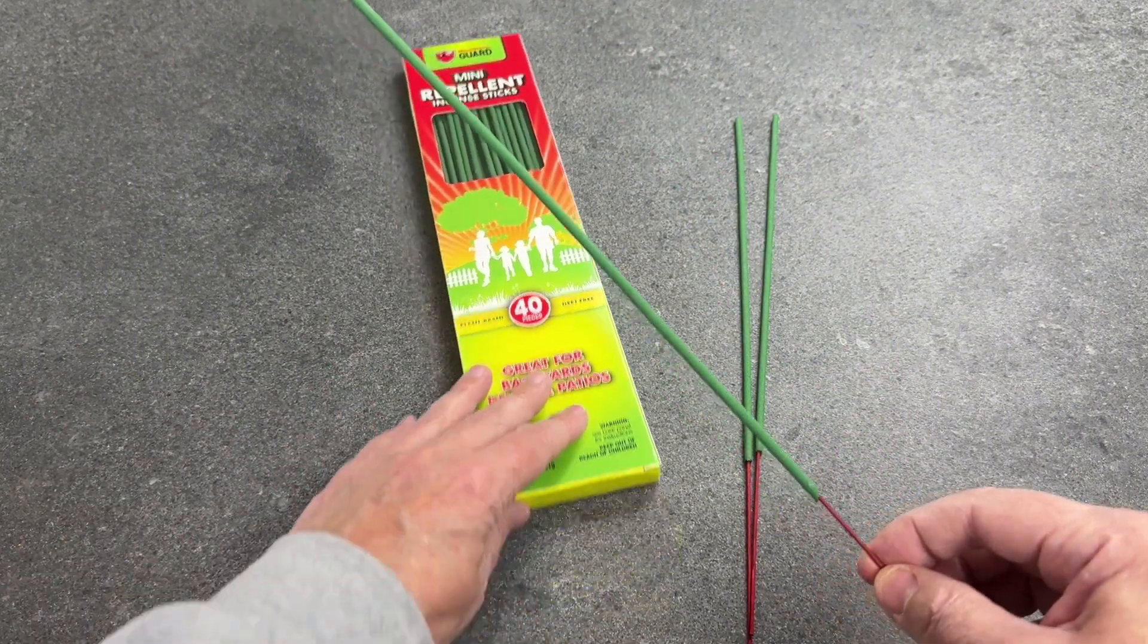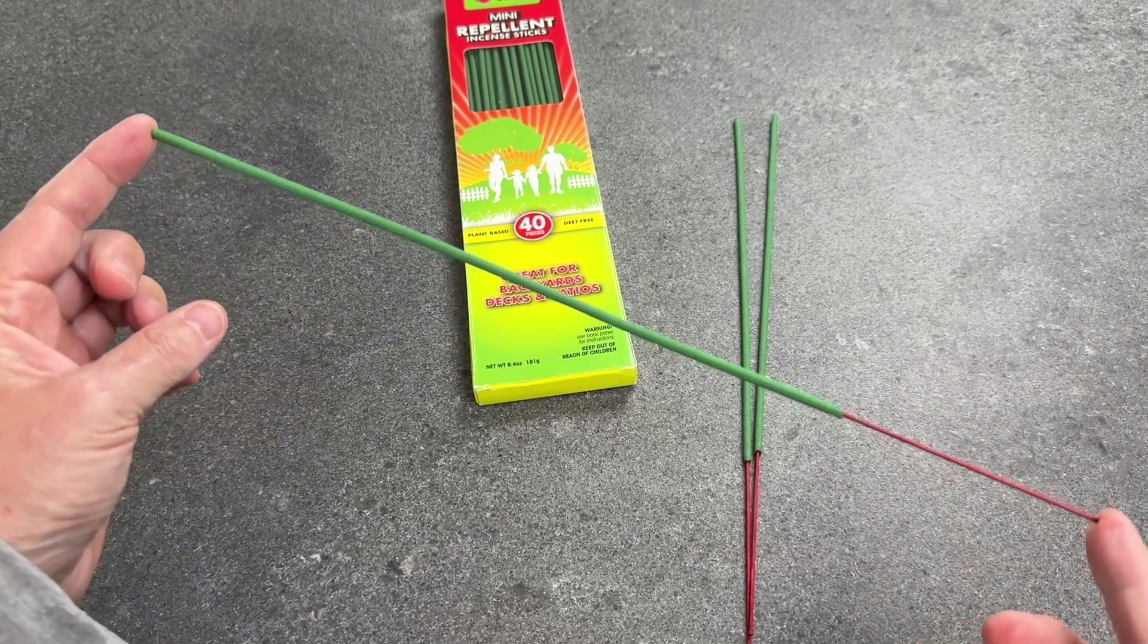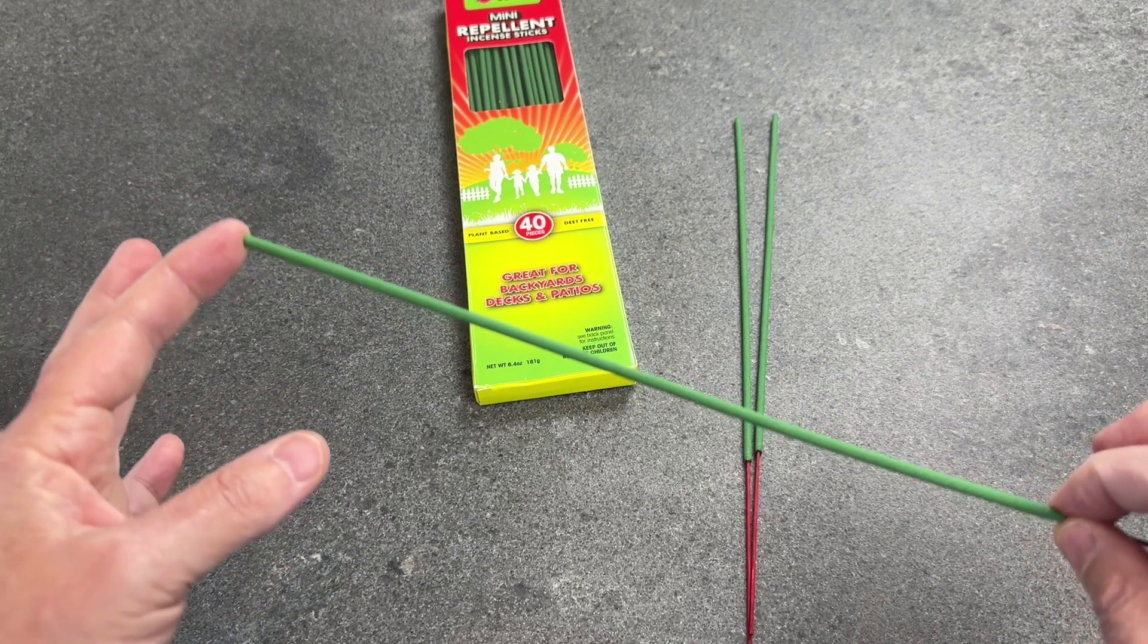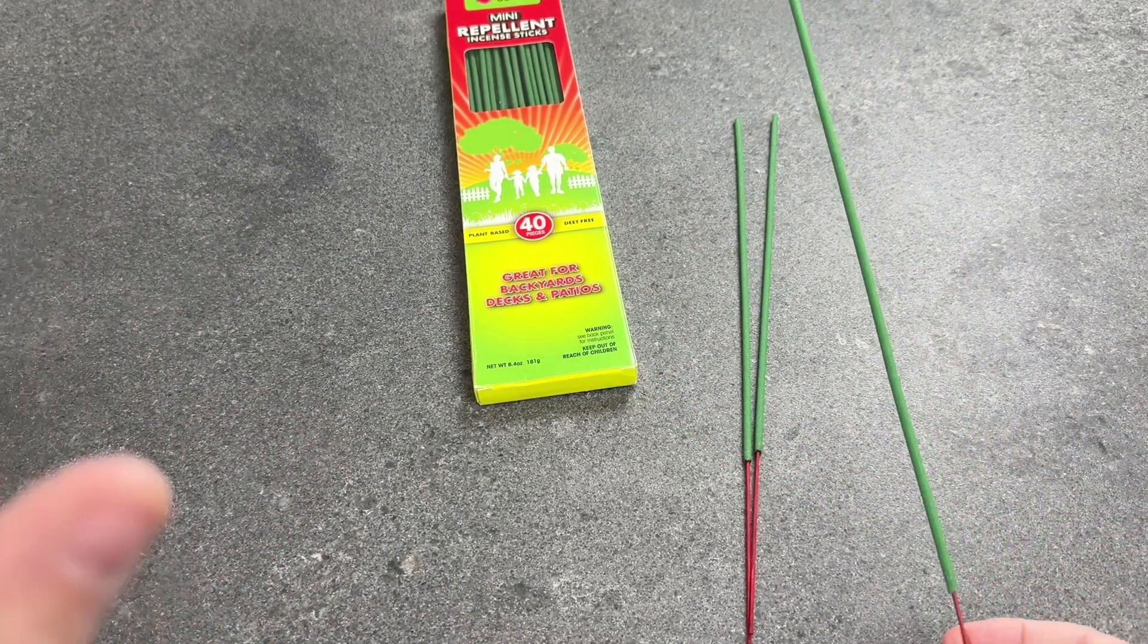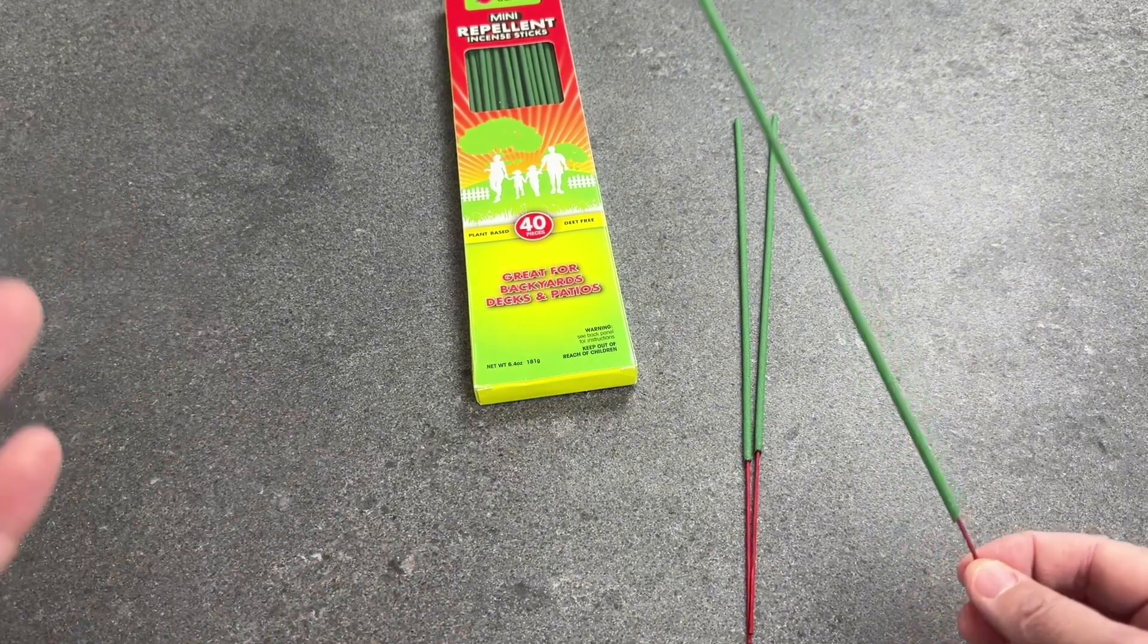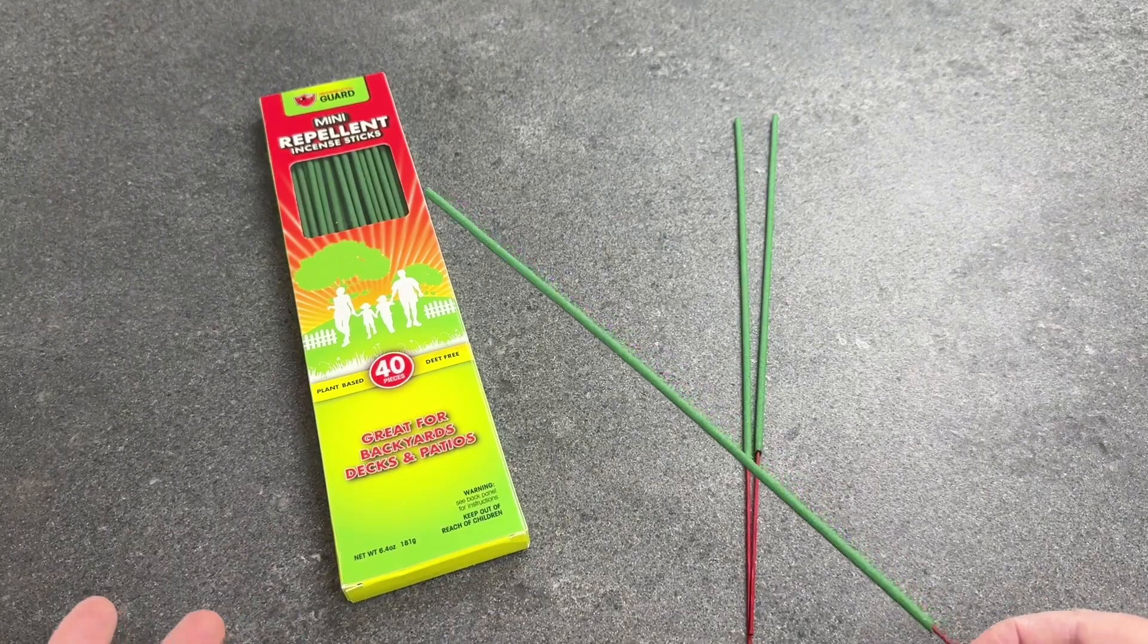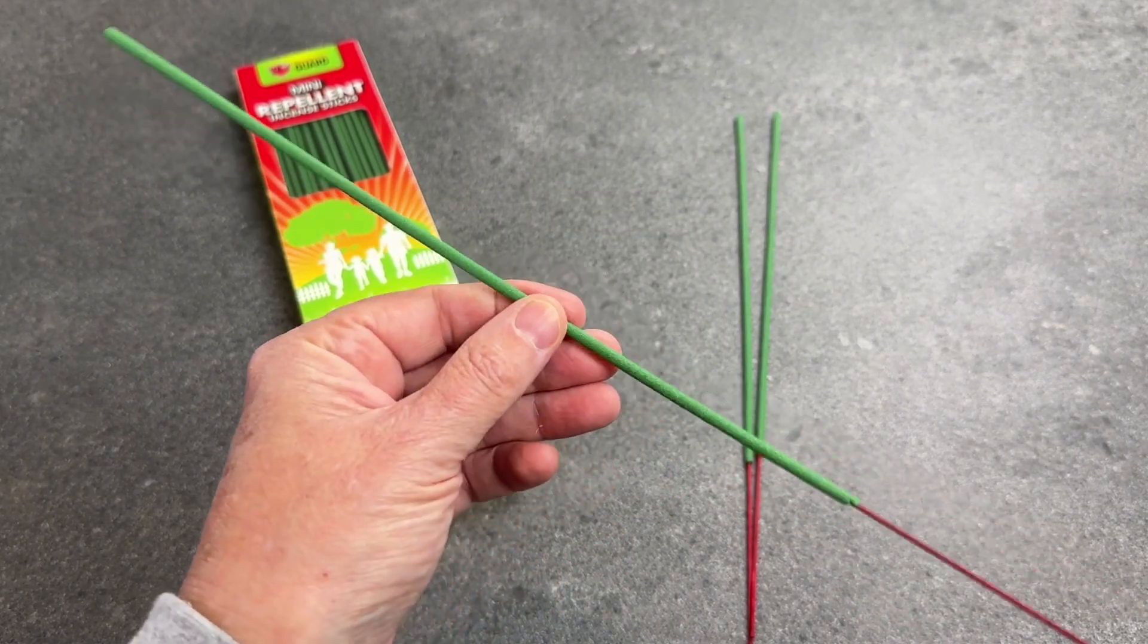Each one of these sticks are 12 and 7/8 inches long and the burnable part here is about 9 and a half inches. That will last for roughly 45 minutes. It'll depend on how much wind is in the area that you're going to be using them in. The more wind, the quicker they're going to burn.